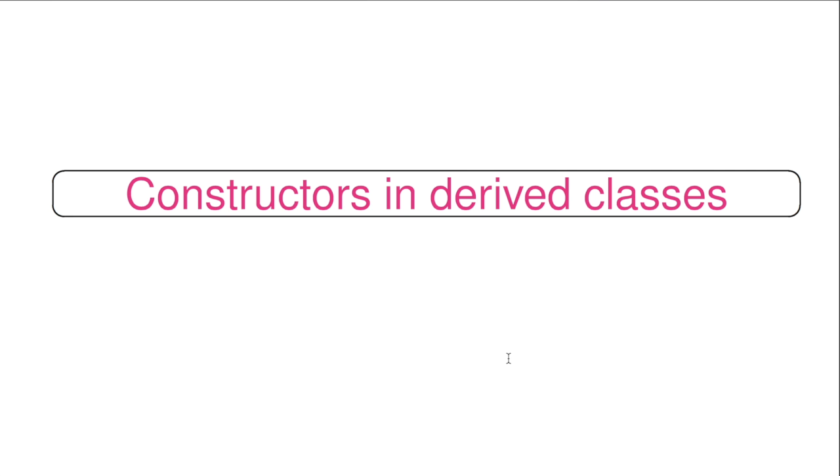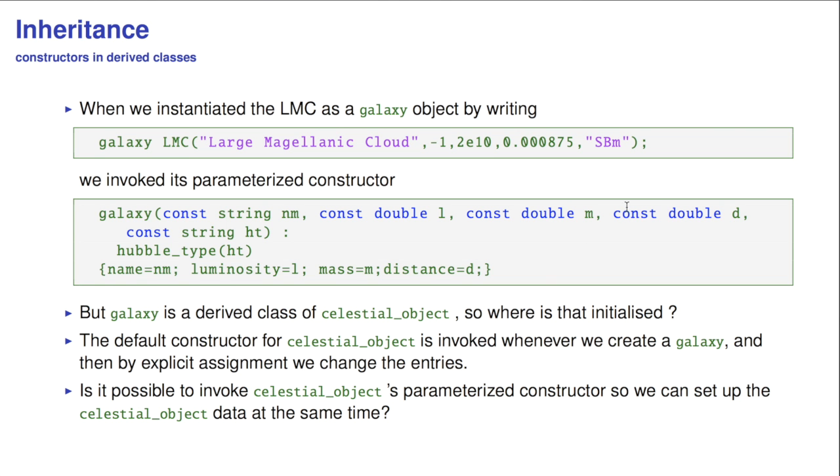Now, there was something clumsy about how we construct elements of a derived class that contain data of the base class. So, let me show you again what I mean with that. When we called the statement to initialize the large Magellanic cloud as a galaxy, we invoked its parameterized constructor. But, as you can see over there, we don't even know how the elements of the base class get constructed, but we initialized those at the moment in the body of the constructor. So, where does the celestial object get initialized? Well, if you don't specify a constructor, the default constructor is invoked when we create a galaxy, and then the explicit assignment will change the entry. So, this is slightly inefficient. Is it actually possible to invoke the celestial object's parameterized constructor so we can set up the celestial object data at the same time? Yes.